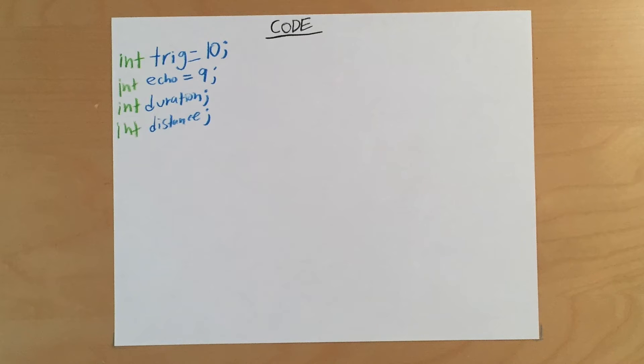Now let's write a simple program that prints the distance from an object. First, set up your variables for trigger pin, the echo pin, and set up two integers: duration and distance.